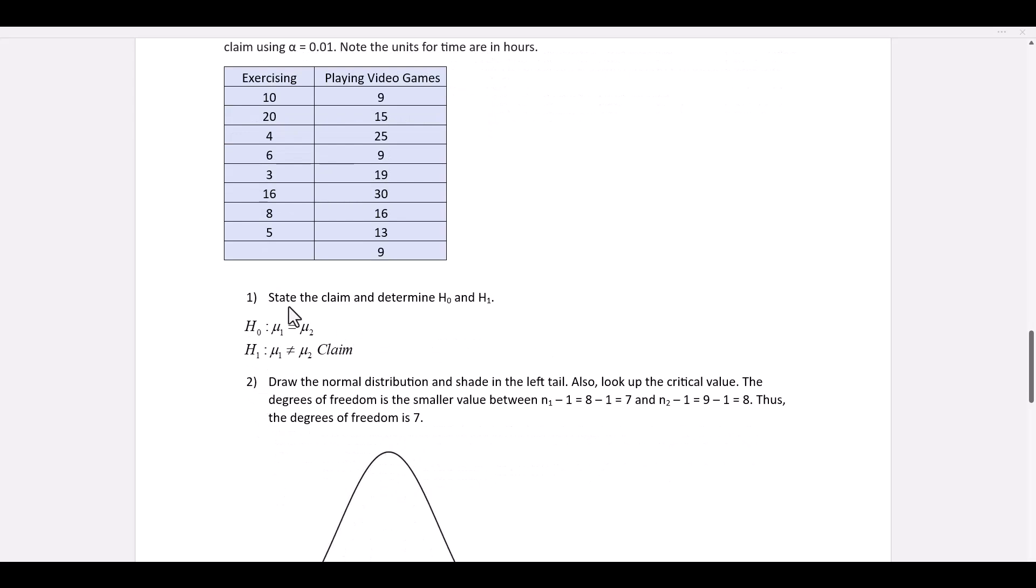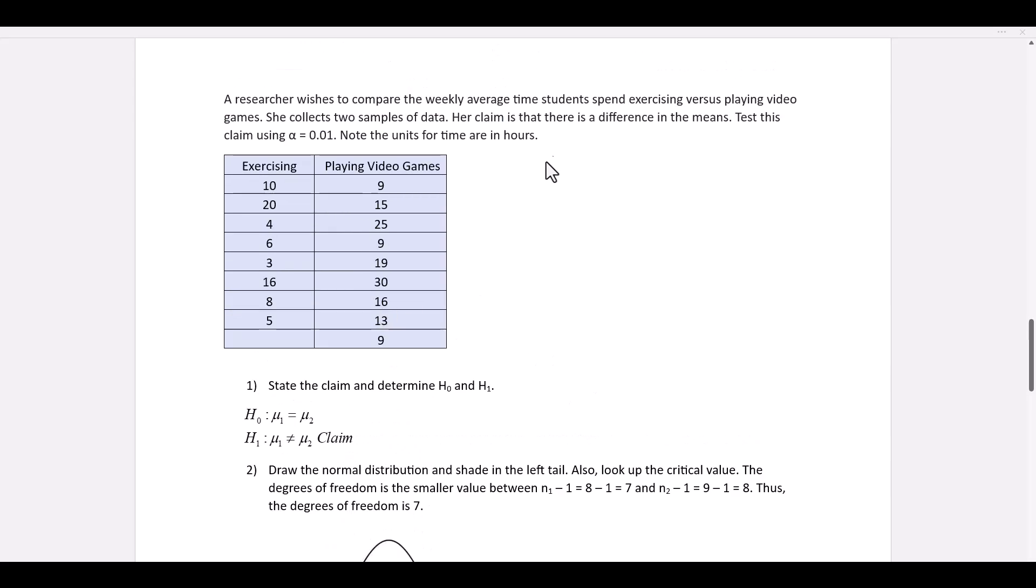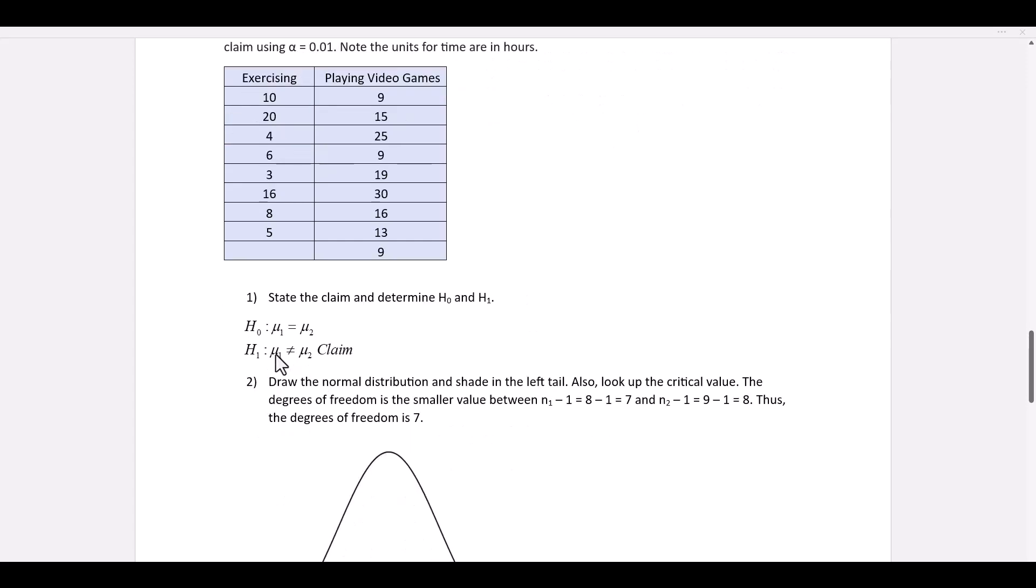The first step is to state the claim. The claim is that there is a difference. This means that the two means are not equal. That's the claim. Since they're not equal, that's an H sub 1 statement. H0 is the opposite statement that the two means are equal.